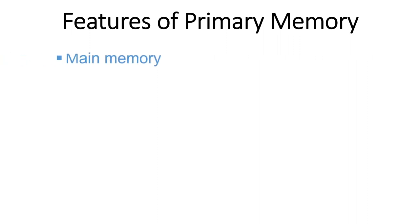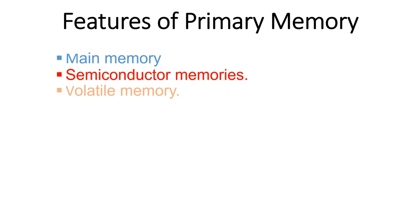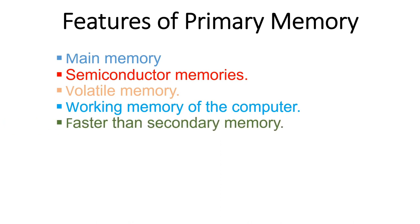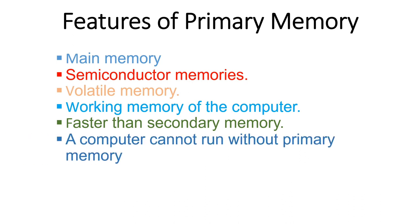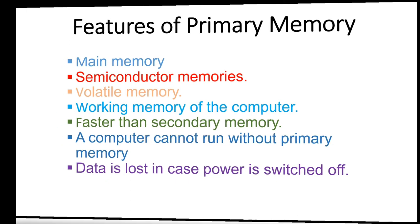The features of primary memory include: they are the main memory of our computer system and are semiconductor memories, meaning they are made from semiconductor elements. They are volatile, holding data on a temporary basis — especially RAM. They are the working memory of the computer; without them, the computer cannot function. They are faster than secondary memory, and data is lost when the power is switched off, especially in the case of RAM.